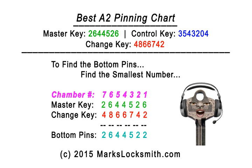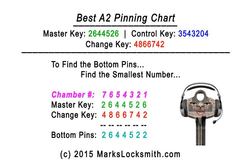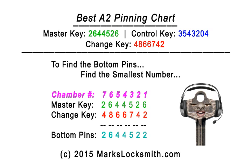Chamber six we have six and eight; lowest number is six. Chamber five, four and six — lowest is four. Chamber four, four or six — lowest is four. Chamber three, five and seven — lowest is five. Chamber two, two and four — lowest is two. Chamber one, we have six and two — two is the lowest number.